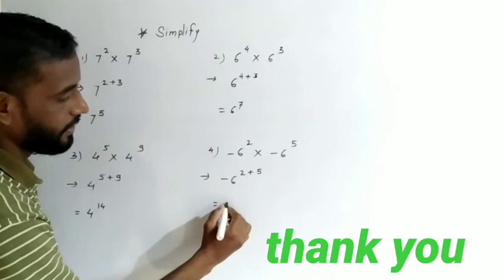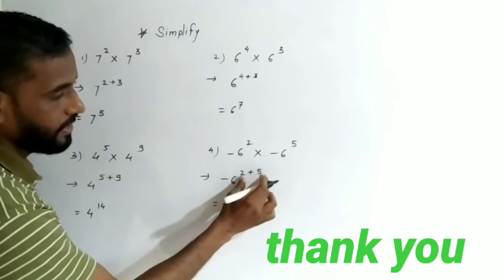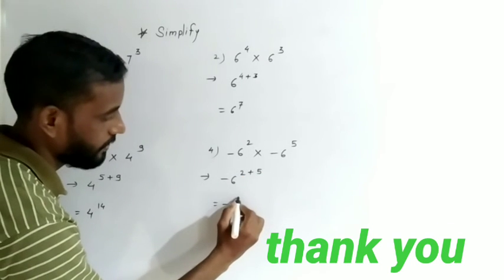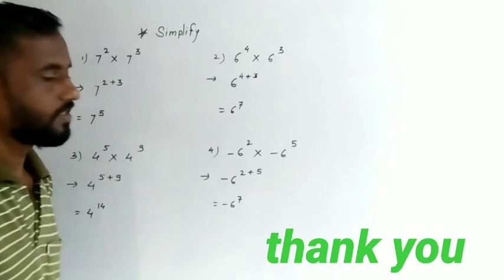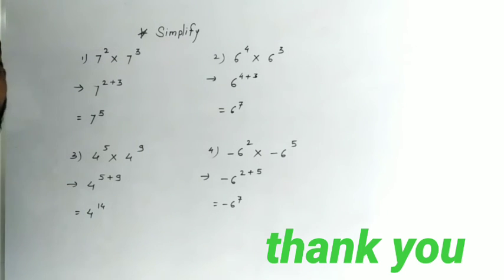Our answer will be minus 6 raised to the power 7, because 2 plus 5 is 7. This way we can simplify it.